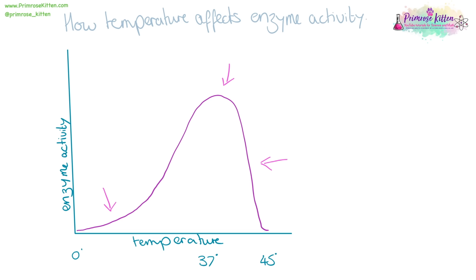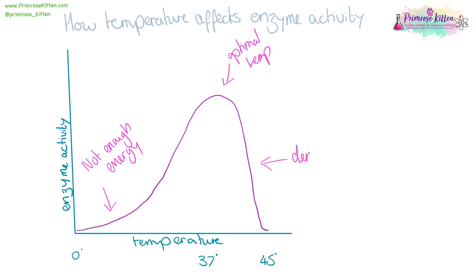You need to know how temperature affects enzyme activity, and it is this kind of lopsided curve. When we have really low temperatures, there is not enough energy. At the peak, this is the optimal temperature. And then after the peak, the enzymes get denatured, which means the links between them holding everything together are being destroyed. The enzyme is not killed - the correct term is denatured.